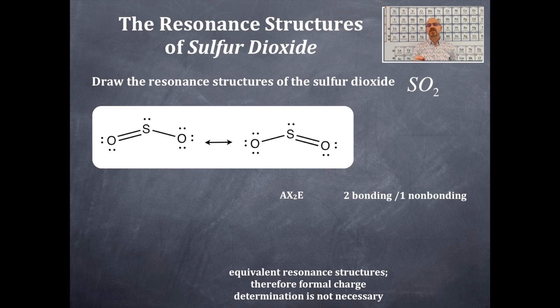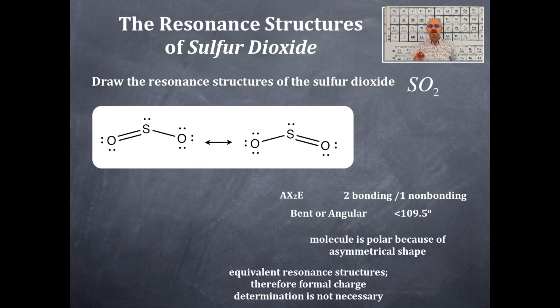So it's an AX2E. That is two bonding, one non-bonding. This is bent or angular. That means it has less than 109.5 degrees, probably more in the range of about 105 degrees. This molecule is polar because it's asymmetrical.